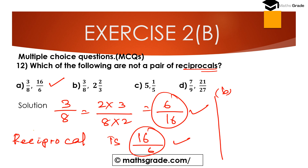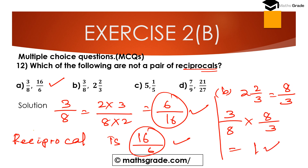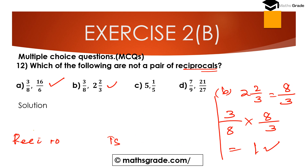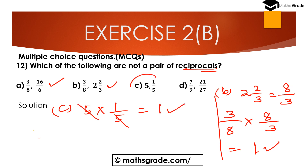Option B: 3/8 and 2 and 2/3. Converting 2 and 2/3 to an improper fraction: 3 multiplied with 2 is 6, plus 2 is 8, giving 8/3. Multiplying 3/8 with 8/3 equals 1, so both are reciprocals. For option C: 5 and 1/5 — multiplying 5 with 1/5, cancelling 5 and 5, equals 1. So 5 and 1/5 are also reciprocals.